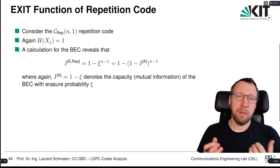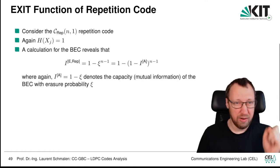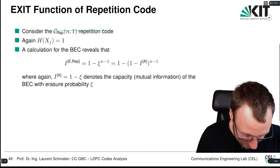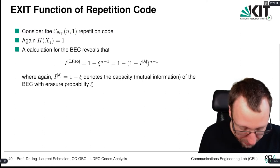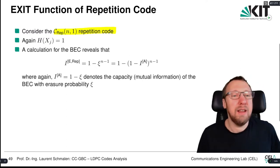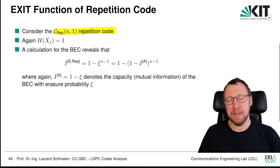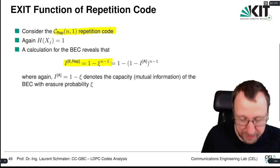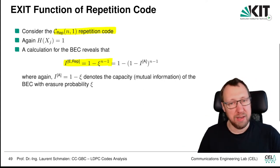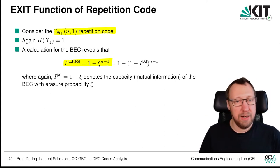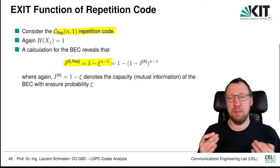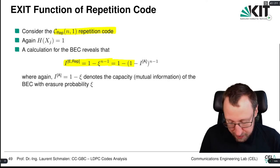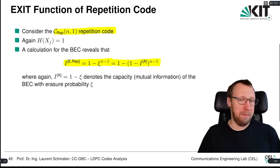For the repetition code of length n, the EXIT function is 1 − ξ^(n−1) = 1 − (1 − I_a)^(n−1).